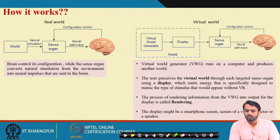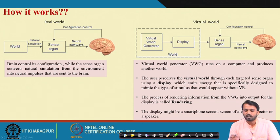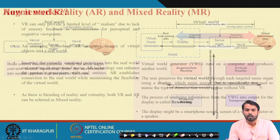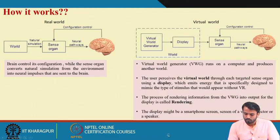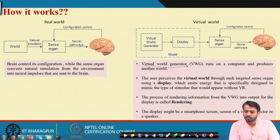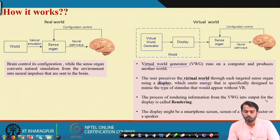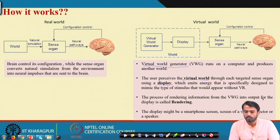In the virtual environment, the virtual world generator runs on a computer and produces a world different from the real world. The user perceives the virtual world through each targeted sense organ using a display, which emits energy specifically designed to mimic the type of stimulus that would appear without VR. The most important part is the virtual world generator. The process of converting information from the virtual world generator into output for the display is called rendering.